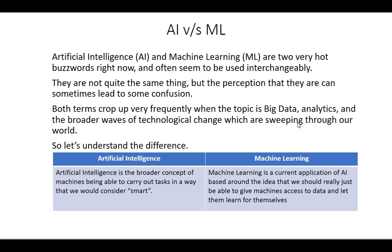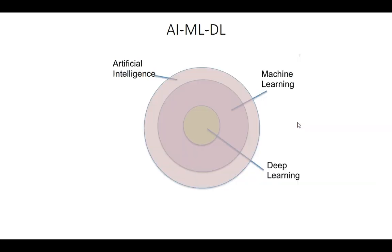Let's understand the difference between artificial intelligence and machine learning. Artificial intelligence is a broad concept of machines being able to carry out tasks in a way that we consider smart. Machine learning is the current applicability of AI, based around the idea that we should simply give machines access to data and let them learn for themselves.